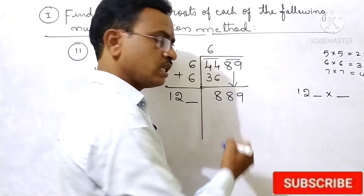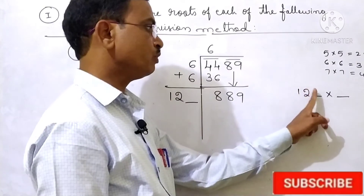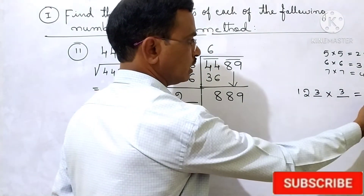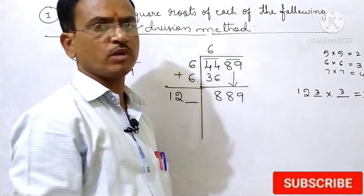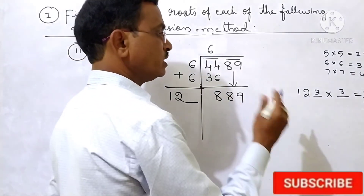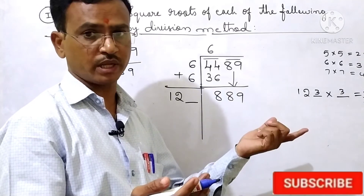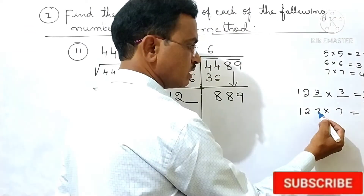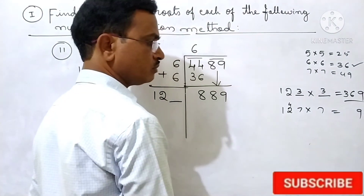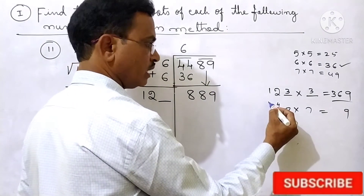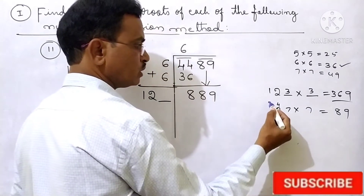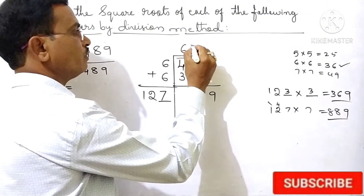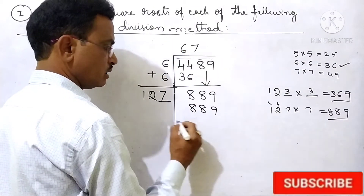Now we want 889. Now 3×3 — the last digit is 9. But if you take 3: 123×3 gives 3×3=9, 3×2=6, 3×1=3, that gives 369. But we want 889. So then 7×7=49, 9 in the unit place. So we take 127×7: 7×7=49, carry 4; 7×2=14, 14+4=18, carry 1; 7×1=7+1=8. Now we got 889. So 127×7=889. Subtract 889, remainder is 0.